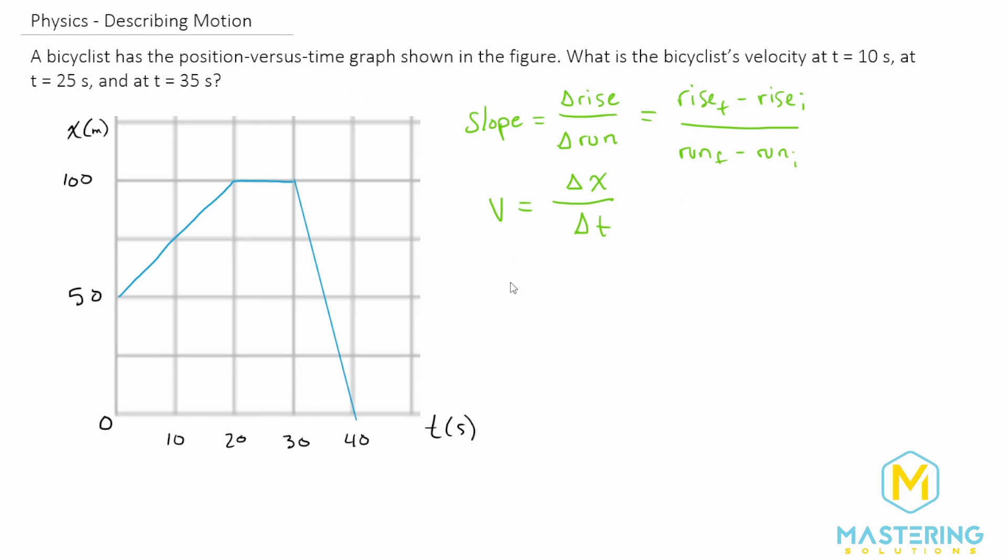So now let's find what the velocity is at 10 seconds. We have x final or rise final was 100 meters, so 100 meters minus the rise initial was 50, so 50 meters divided by the run which was 20 seconds for the final minus 0 seconds for the initial. That gives us 50 meters divided by 20 seconds.